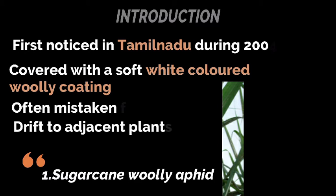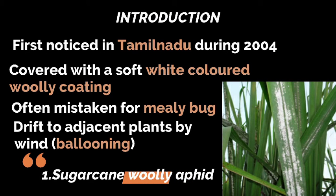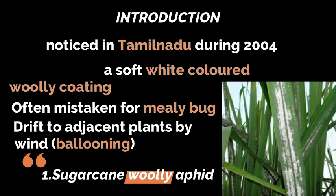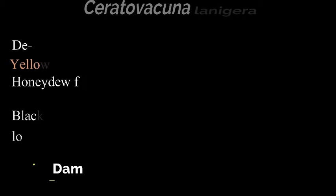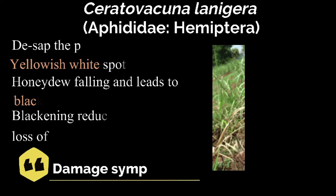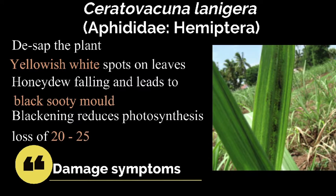Sugarcane woolly aphid, which was first noticed in Tamil Nadu during 2004, is often covered with a soft white colored woolly coating and often mistaken for mealy bug. The sugarcane woolly aphid is dispersed by wind or drift to adjacent plants by wind, which is called ballooning. Ceratovacuna lanigera, which belongs to the family Aphididae and comes under the order Hemiptera.